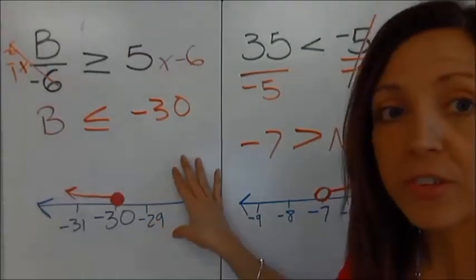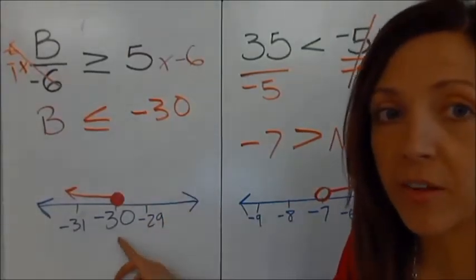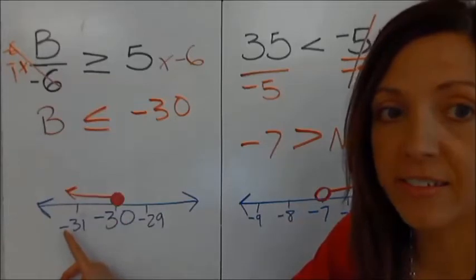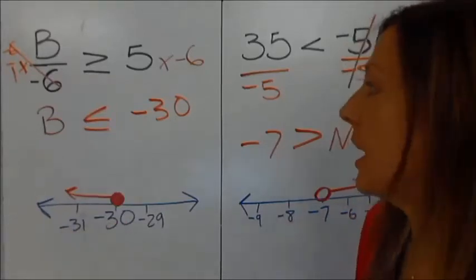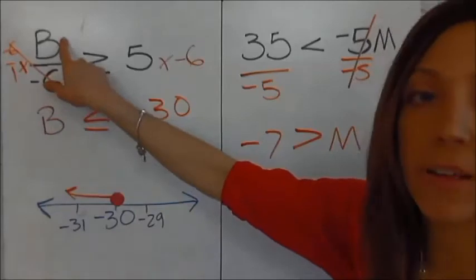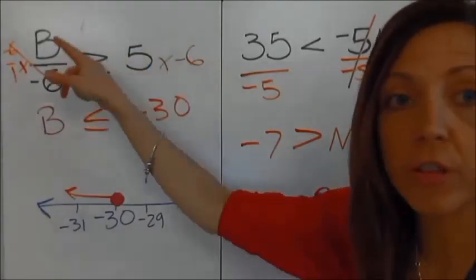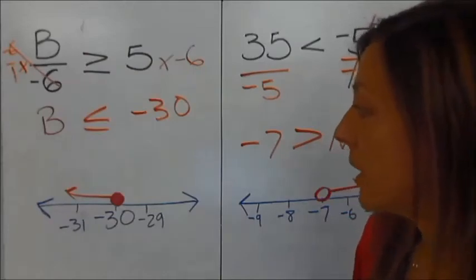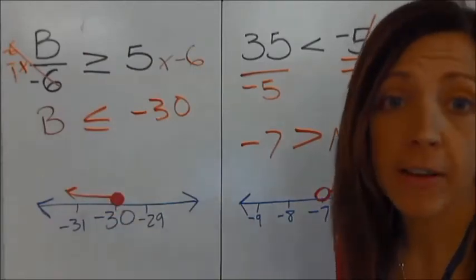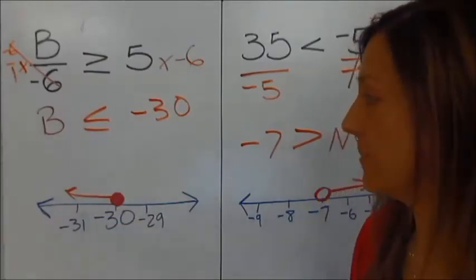I have graphed this inequality on the graph. I'm pointing to everything that's less than negative 30, and any of these values to the left could be plugged in for b, and this inequality would be true. The original inequality would be true. So let's pick one, plug it in, and find out why we have to flip the sign.